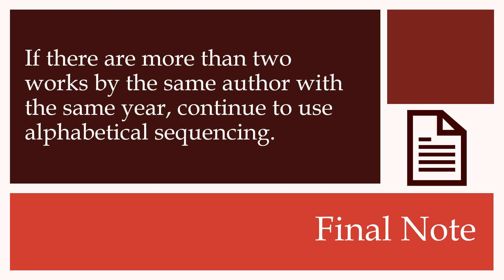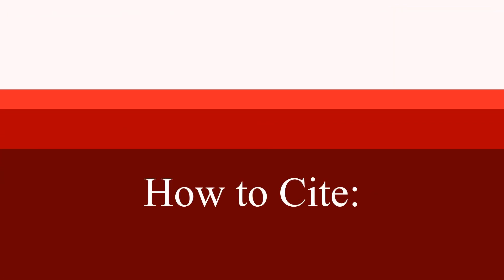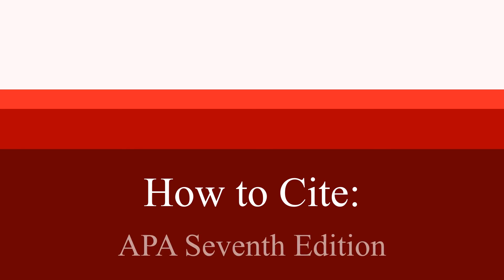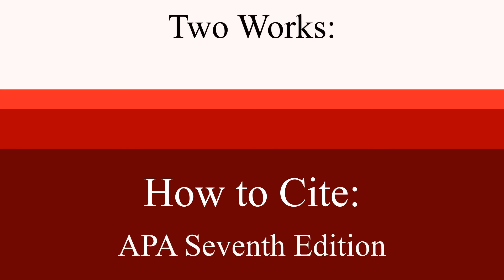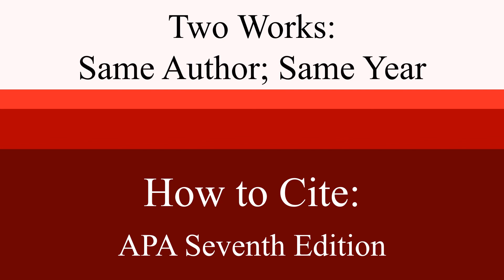Final note: if there are more than two works by the same author in the same year, you will continue to use alphabetical sequencing. That means you'll simply add C and D to the subsequent sources. Now you know how to create an in-text citation in accordance with APA 7th edition for two or more works that have the same author and the same year of publication.